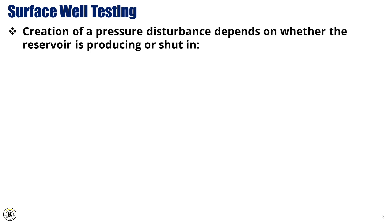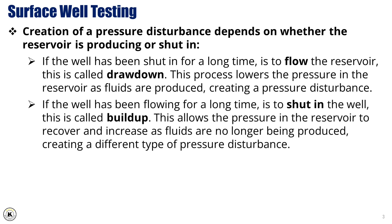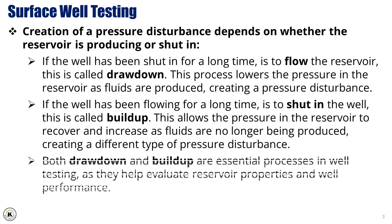The creation of a pressure disturbance in a well depends on whether the reservoir is producing or shut in. If the well has been shut in for a long time and is then flowed, this is called drawdown. This process lowers the pressure in the reservoir as fluids are produced, creating a pressure disturbance. If the well has been flowing for a long time and is then shut in, this is called buildup. This allows the pressure in the reservoir to recover and increase as fluids are no longer being produced. Both drawdown and buildup are essential processes in well testing, as they help evaluate reservoir properties and well performance.